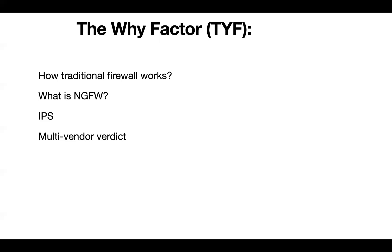Firewalls lacked the ability to identify exactly what the application is. That's when next-gen firewalls came in — instead of writing policies based on port numbers alone, or even port and IP pairs, we can now write policies based on the application. Applications like web browsing, Facebook, Facebook chat, Facebook games, WhatsApp, or Play Store can all be classified as applications that you can allow or deny.